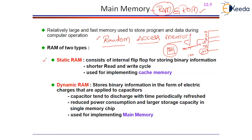There are two kinds of RAMs: static RAM and dynamic RAM. Static RAM is designed with semiconductor chips — semiconductor being materials like antimony or germanium, which require power. As long as power is available in the static RAM, your data is available. The moment you lose power, you lose every data within the static RAM. Static RAM is made up of internal flip-flops for storing binary information. It has shorter read and write cycles, meaning data can be accessed quite fast. Static RAM is used for implementing cache memory.